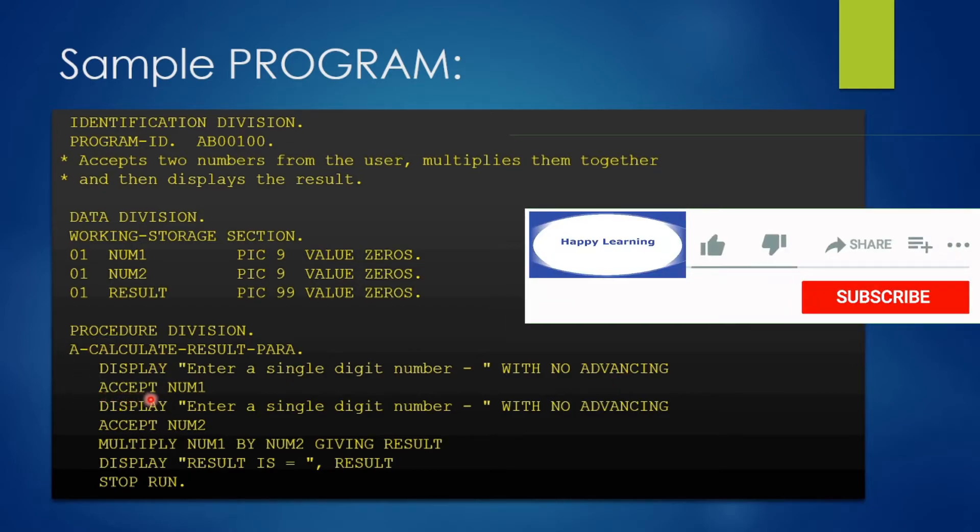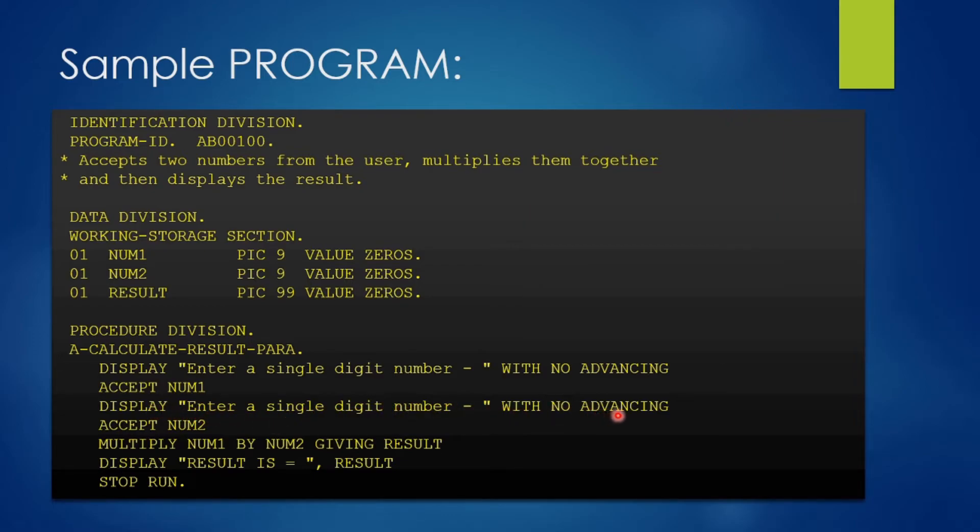After that, we are accepting the value in the num1 variable. After accepting the first value, we will again display a message enter a single digit number with no advancing to accept the second value. This second value will be accepted in num2 variable.